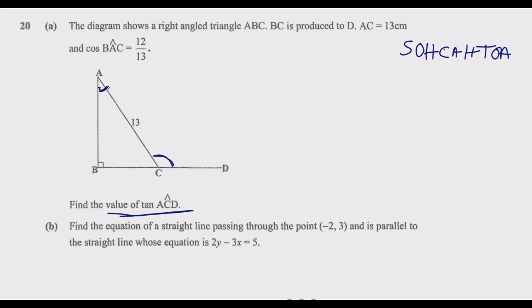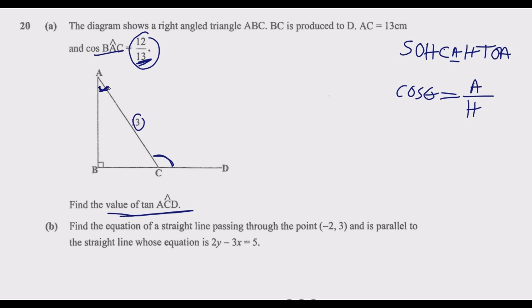We've been given angle BAC. In trigonometry, cosine ratio gives us adjacent over hypotenuse. The hypotenuse is 13, which is given to us. Since cos of this angle equals 12 over 13, the adjacent side where this angle sits must be 12, so that this becomes 12 over 13. This means this side is 12 centimeters.